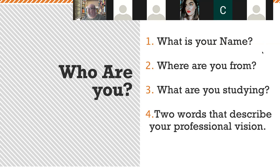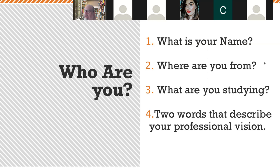Alyssa Molina: My name is Alyssa Molina, I'm from Chesapeake, Virginia, and I'm studying media communications. Two words to describe my professional vision — I would say creative. I don't really know another word; I just like being creative in any capacity that I can.